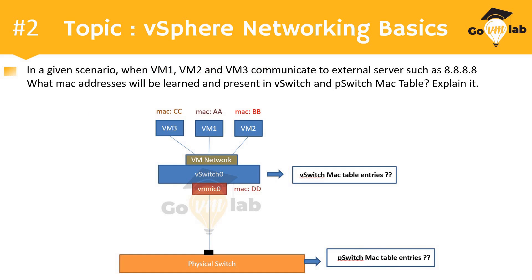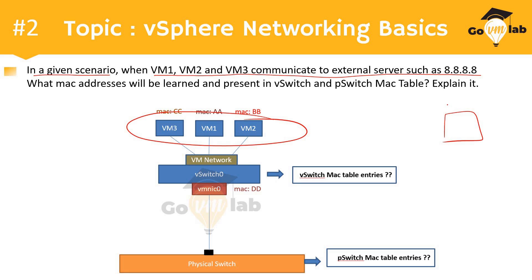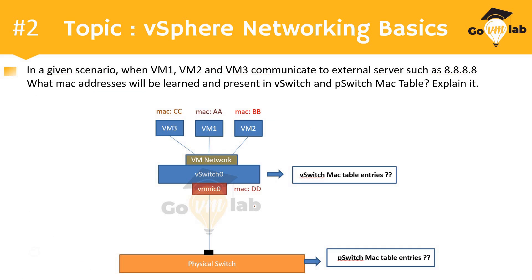The question asks: in the given scenario, when VM1, VM2, and VM3 communicate to an external server such as 8.8.8.8, what MAC addresses will be learned and present in your virtual switch and physical switch MAC tables? We have to figure out what MAC addresses are registered in the vSwitch MAC table and what MAC addresses are present in your physical switch MAC table.